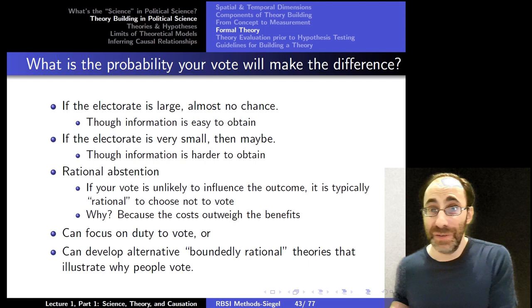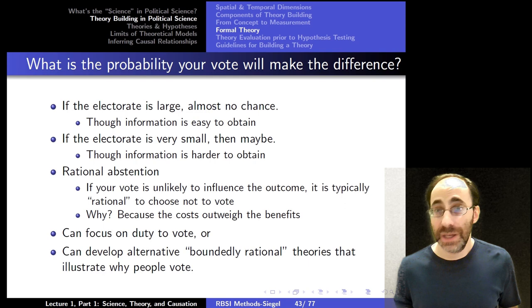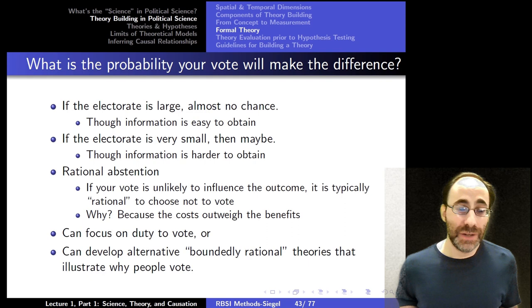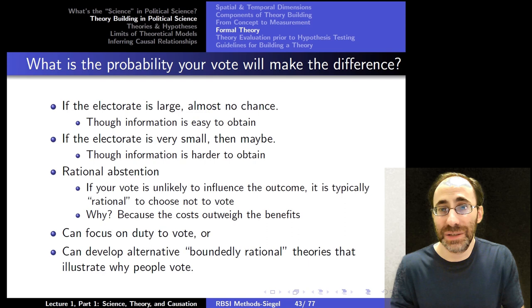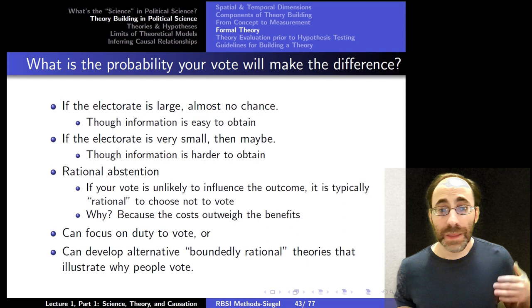When you have a large electorate, you are very, very unlikely to be pivotal. It is not impossible, but in a population of millions, the chance that your particular vote is the difference between a tie and a loss is small. That said, in a very big election, it's easy to get information often, comparatively speaking. If you have a very small electorate, like a local school board election, maybe you have a very high chance of being pivotal, in which case you have much more of a benefit if your benefit is viewed as the increase in probability that your candidate wins. That said, information is also harder to obtain in a small election, potentially.